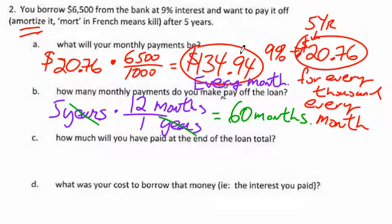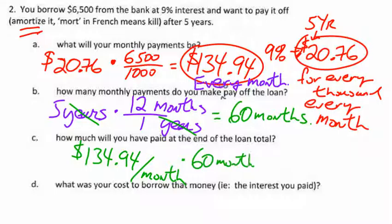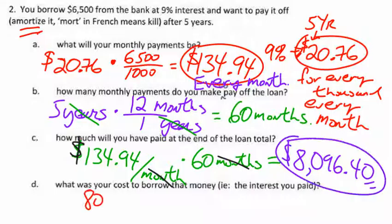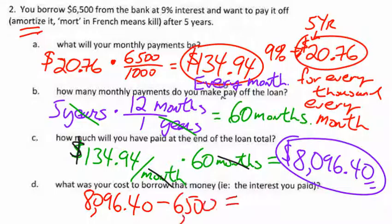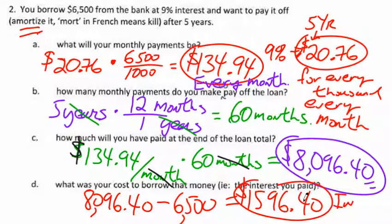So how much do you pay in total? You're paying one hundred thirty-four ninety-four every month for sixty months — multiply those together, keeping track of units as we did in grade ten. The total is eight thousand ninety-six dollars. It cost you one thousand five hundred ninety-six dollars and forty cents in interest to borrow six thousand five hundred over five years.